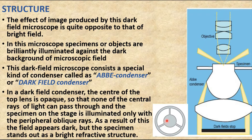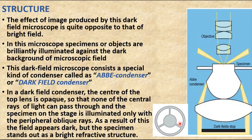In this dark field condenser, the center of the top lens is opaque so that none of the central rays can pass through the specimen on the stage. The specimen is illuminated only with peripheral oblique rays. As a result, the field appears darker and the specimen stands out as a bright refractive structure.